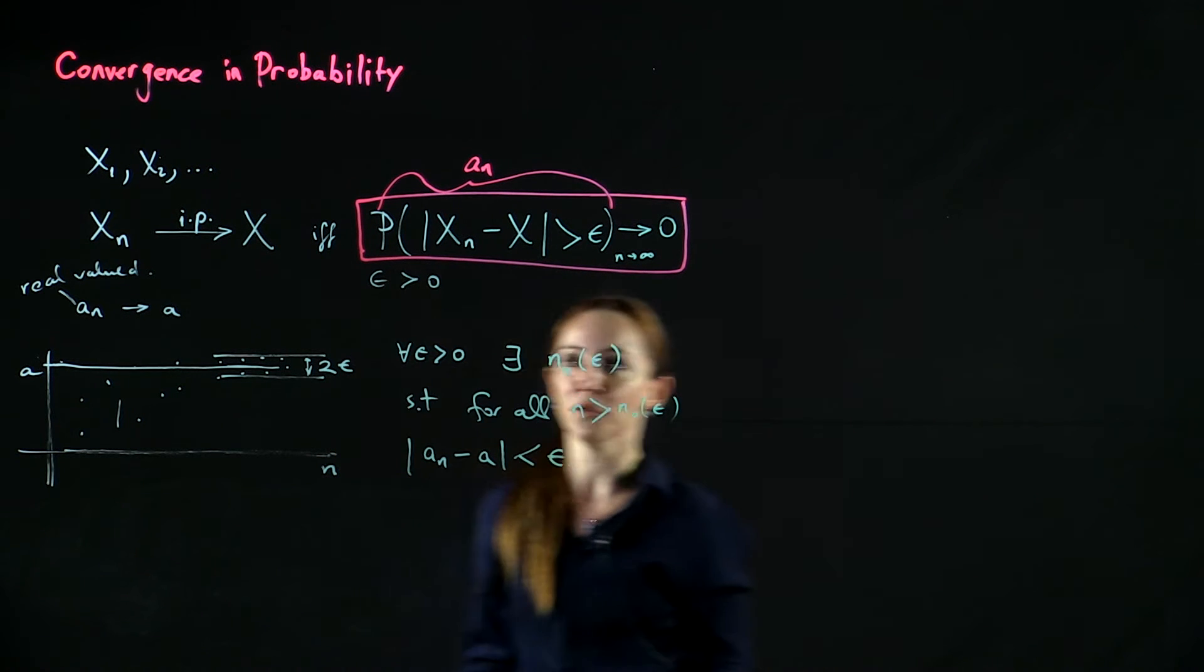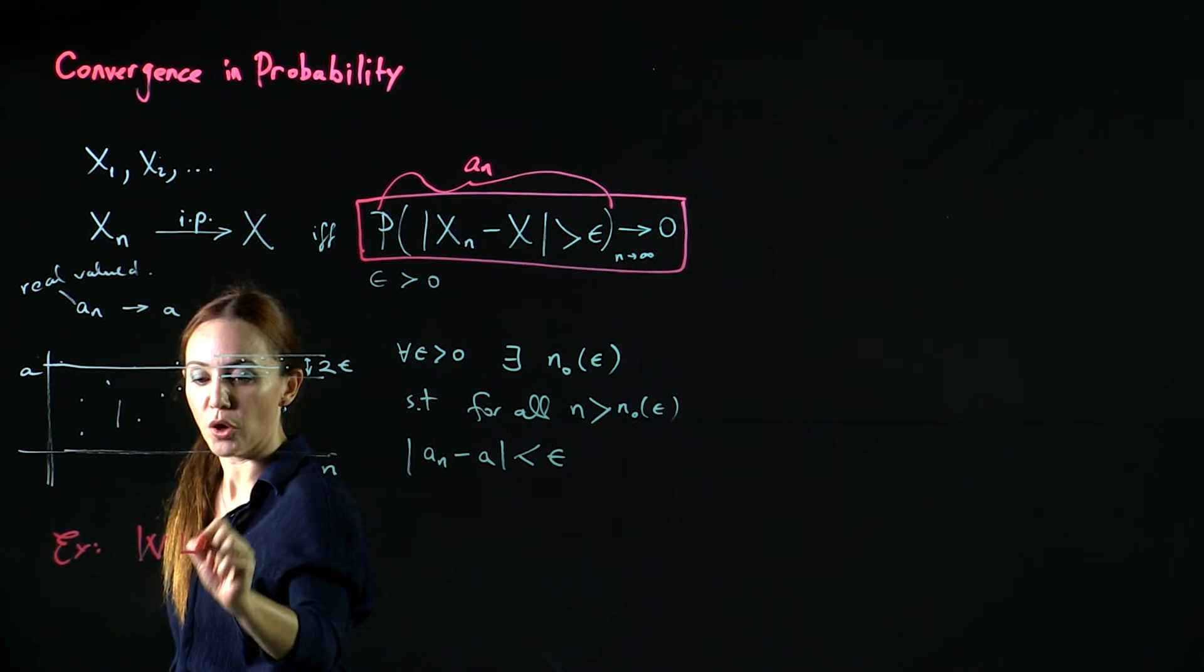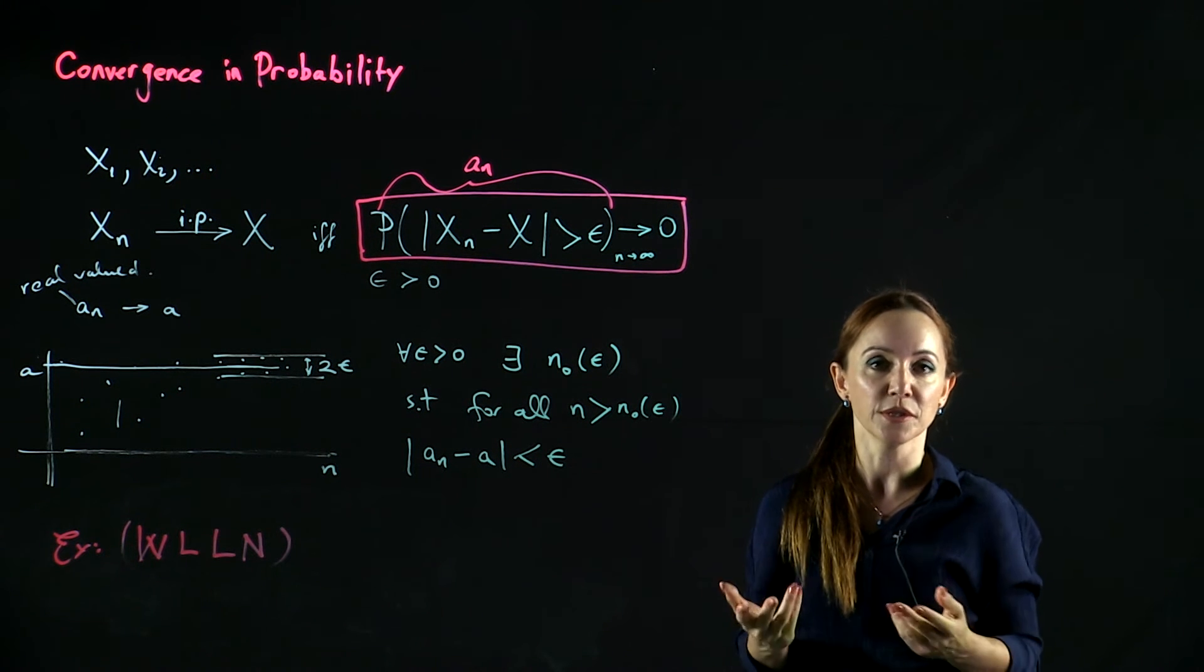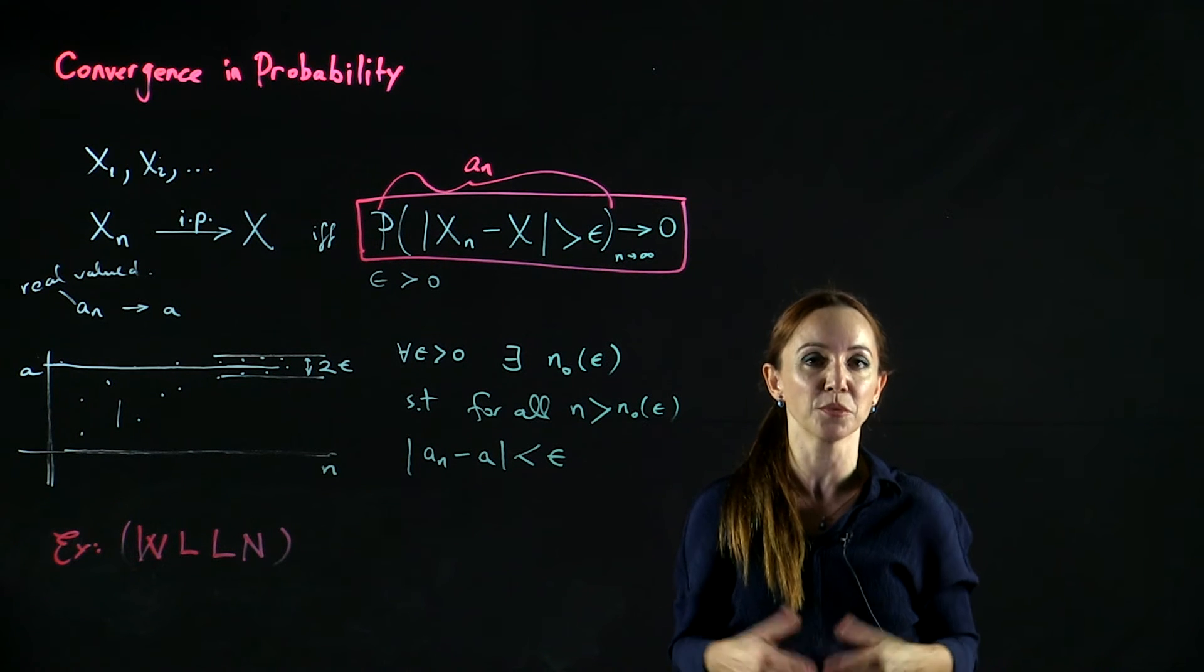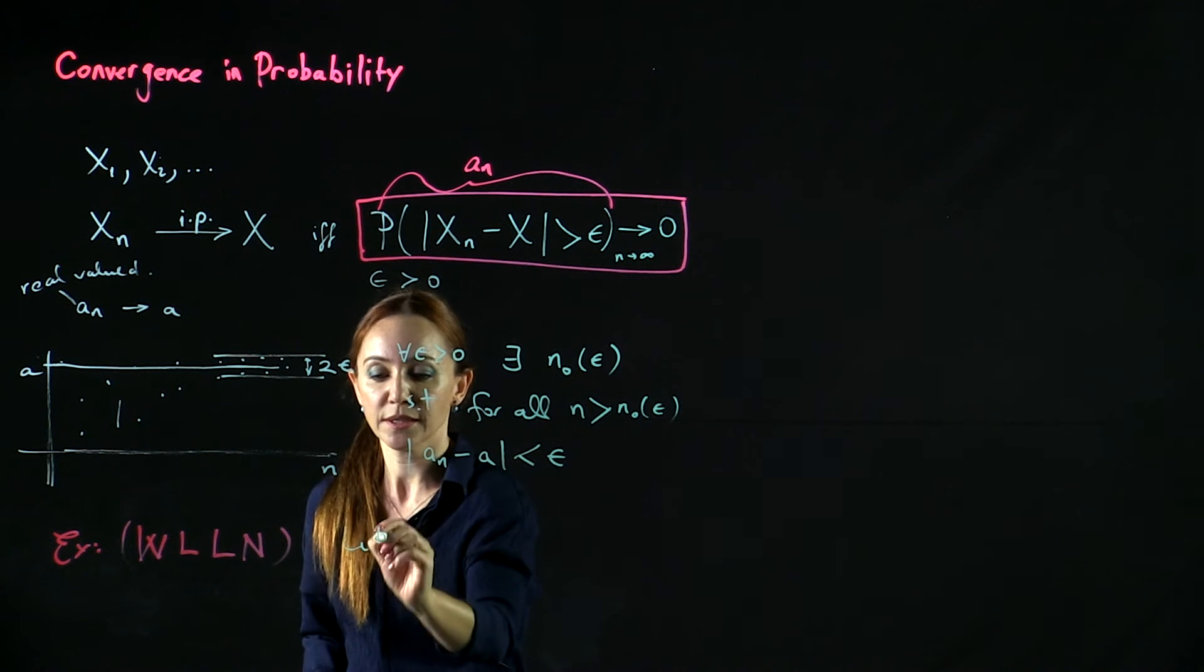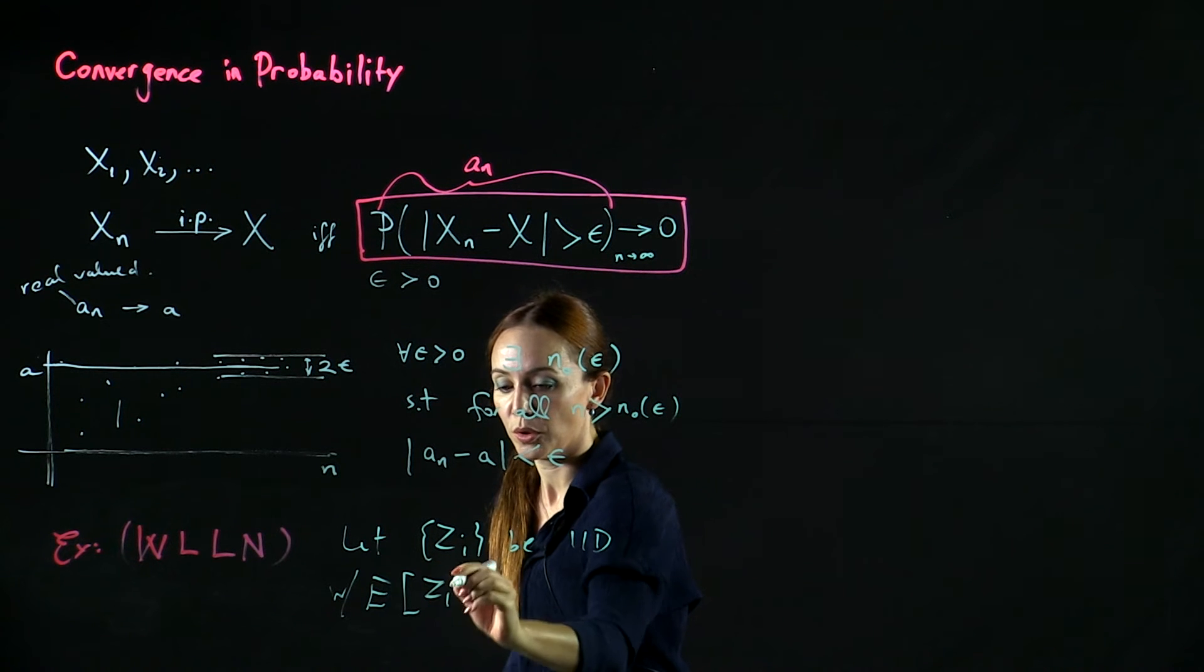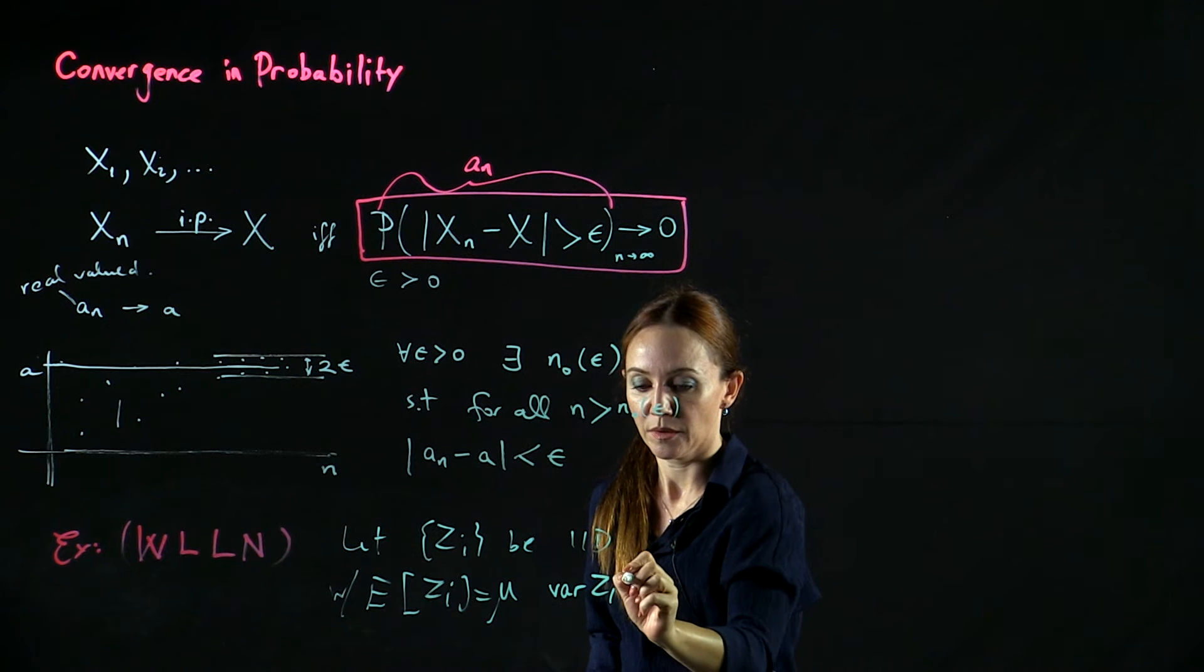An important example of convergence in probability is the weak law of large numbers (WLLN). For this we are considering a sequence of IID, that is independent and identically distributed, random variables Zi's with mean mu and variance sigma squared.